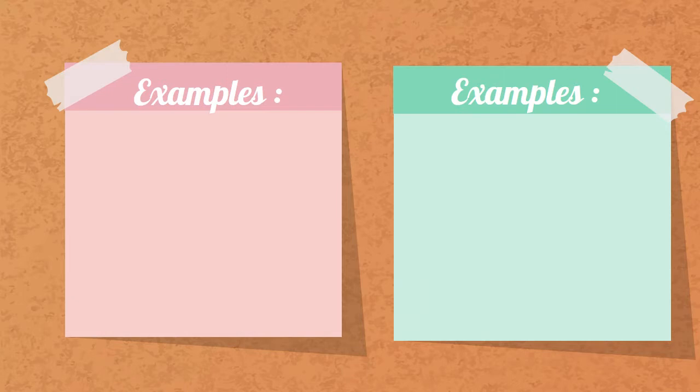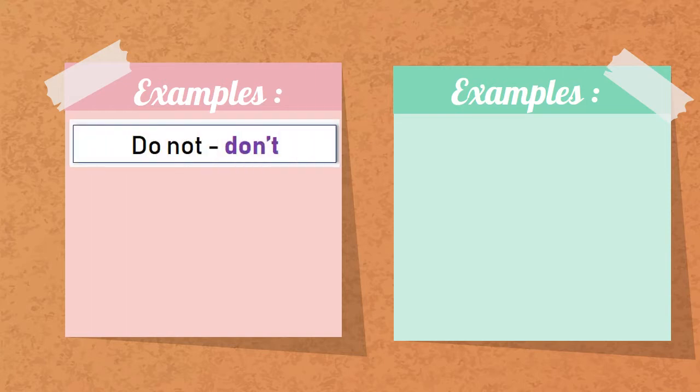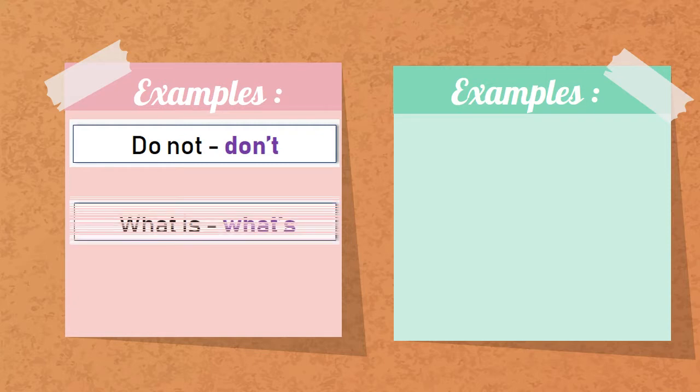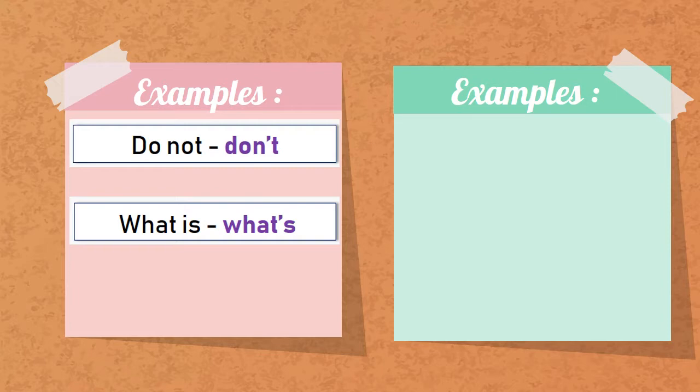You can observe in these examples and you are going to tell me what is the one more thing we are doing. Do not—don't. What is—what's. We are removing the O from not and we are writing apostrophe. What is—we are removing I from is and we are combining what and is with an apostrophe. We are removing the distance between the two words. This is the other thing we are doing.